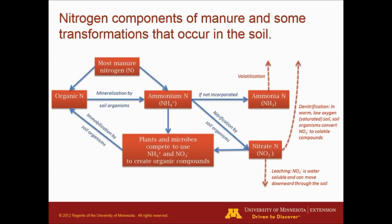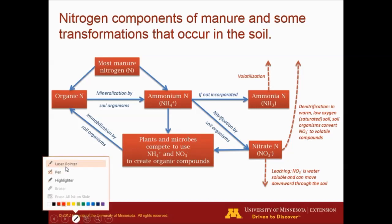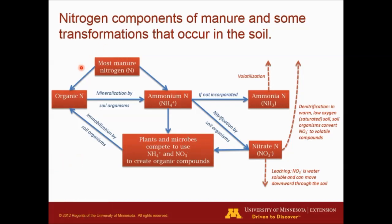Here's a summary of some of the nitrogen components in manure. Most of the manure will have organic nitrogen, which is the organic matter in there, and inorganic nitrogen, which is typically the ammonium. From there, many transformations can happen. We can have that ammonium be used by plants and microbes, or if we don't incorporate the manure, that ammonium becomes ammonia and is lost to the environment. The ammonium can also become nitrate when transformed by soil microorganisms, and that nitrate may then leach to the groundwater.